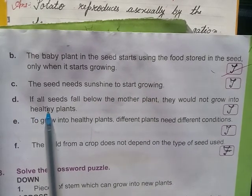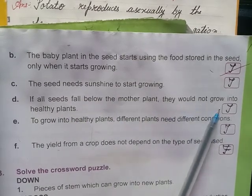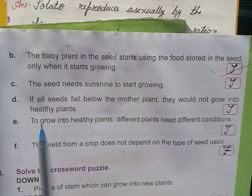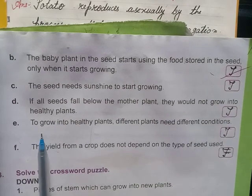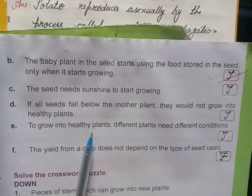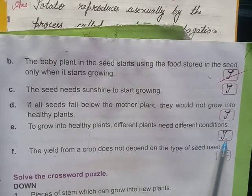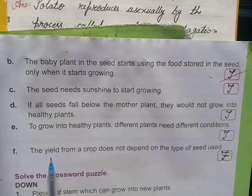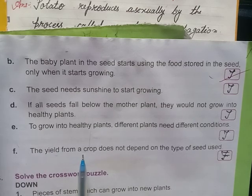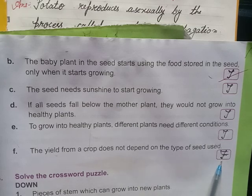D: If all seeds fall below the mother plant, they would not grow into healthy plants. True. E: For growing into healthy plants, different plants need different conditions. True. F: The yield from a crop does not depend on the type of seed used. False.